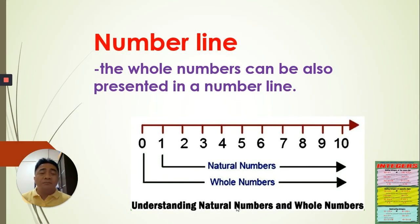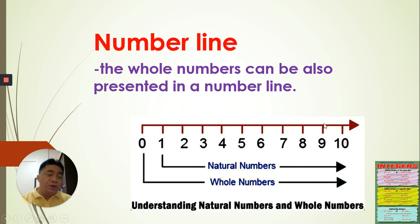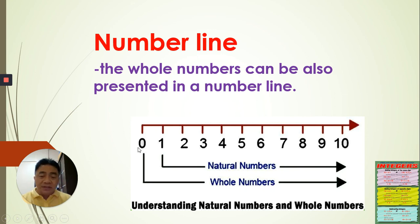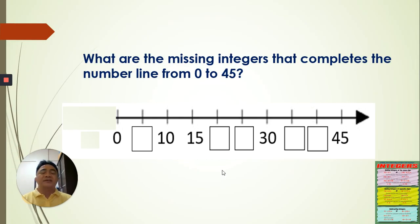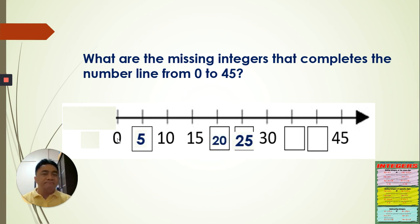Whole numbers can also be represented on a number line, just like integers. But notice that we start with zero, and the arrow does not continue to the left. Whole numbers start at zero and go only to the positive side — to the right. From zero going to the right to infinity. The whole numbers include zero, while natural numbers start from one. For our activity on the number line, we start with zero, then five, twenty, twenty-five, thirty-five, and forty.